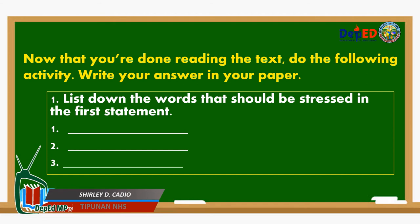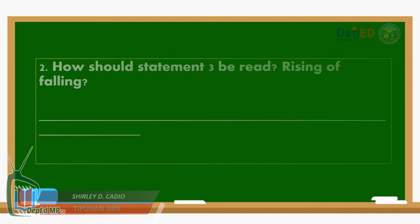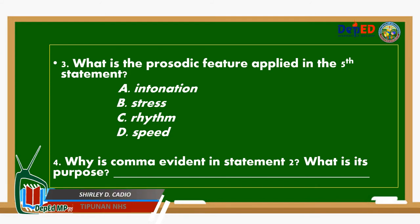Now that you are done reading the text, do the following activity. Number 1: List down the words that should be stressed in the first statement. Number 2: How should statement 3 be read — rising or falling? Number 3: What is the prosodic feature applied in the fifth statement? A. Intonation. B. Stress. C. Rhythm. D. Speed. Number 4: Why is a comma evident in statement number 2? What is its purpose?